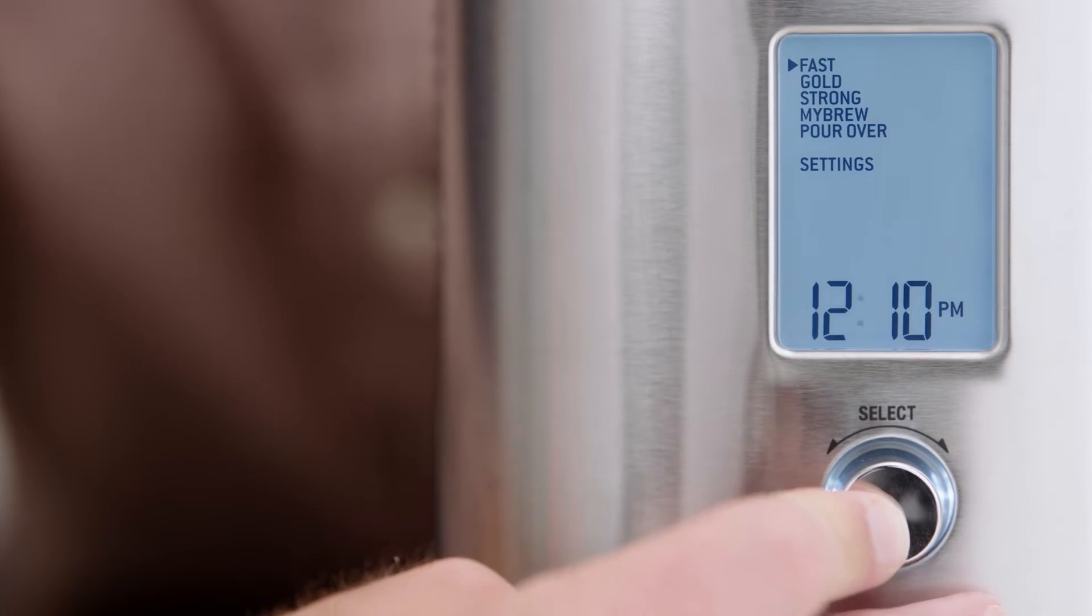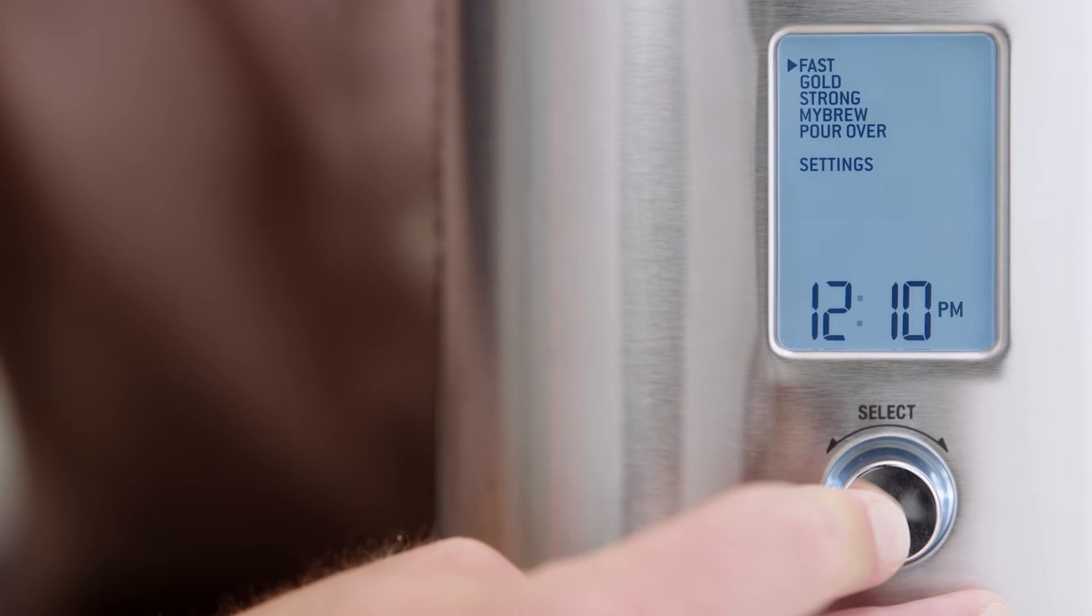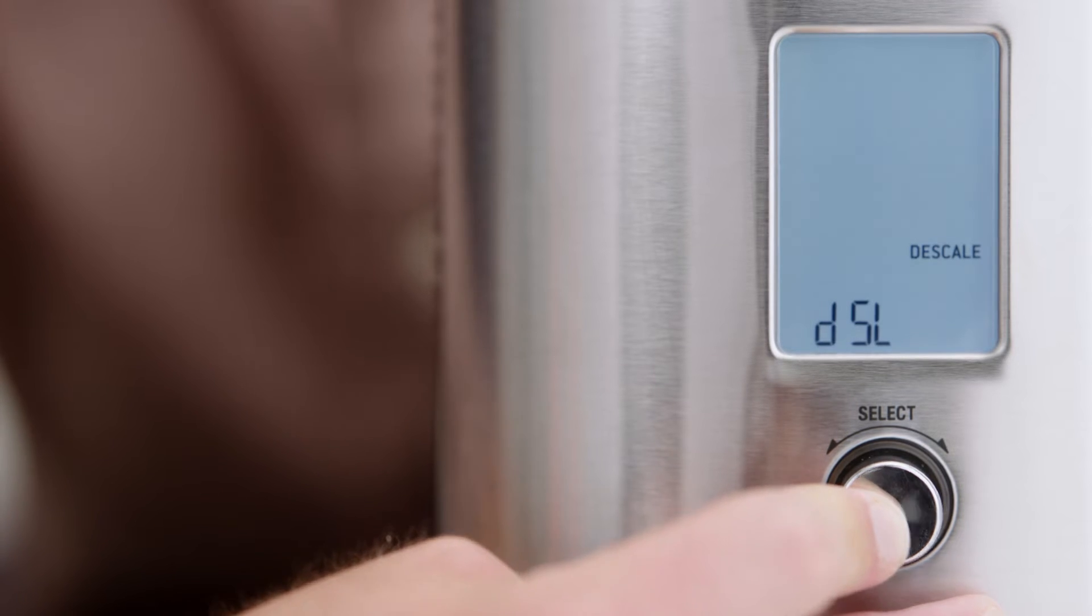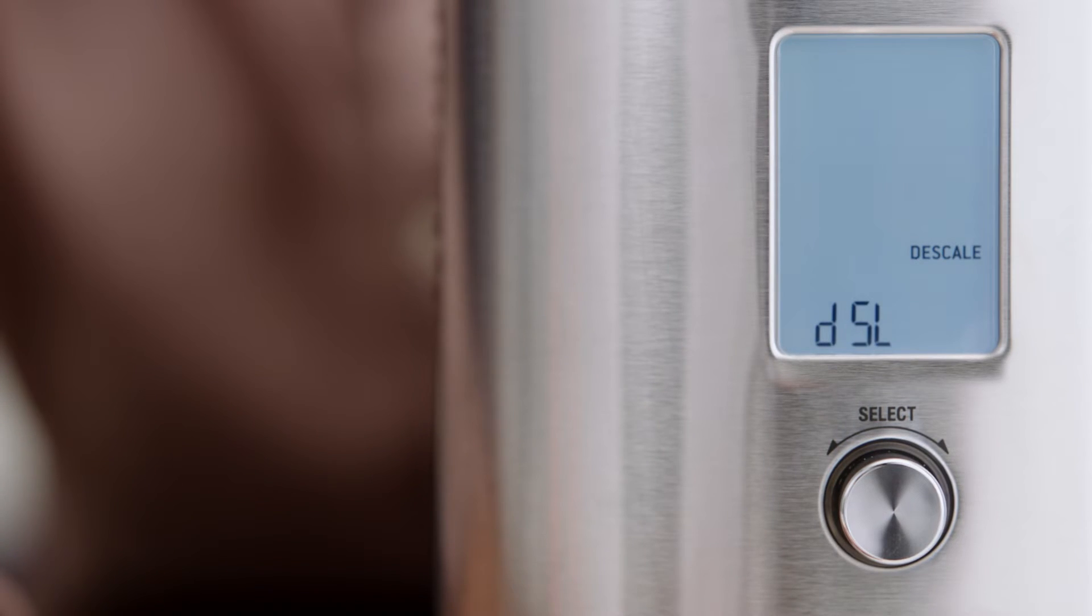Press the select button for three seconds to start the descale cycle. The LCD will show DSL and then display the remaining duration of the descaling cycle.